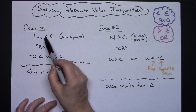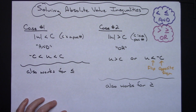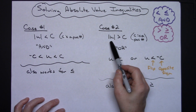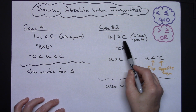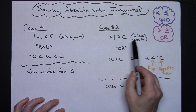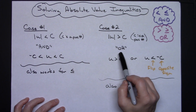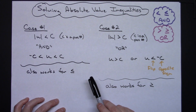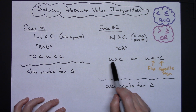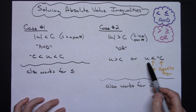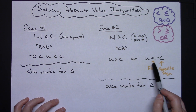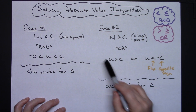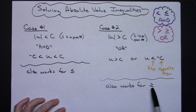This also works for less than or equal to. Case number two is when the absolute value of an expression is greater than some positive value C. With the greater than symbol, we know it's an OR. We write the expression greater than C, or flip the inequality and take the opposite sign: U is less than negative C. This also works for greater than or equal to.